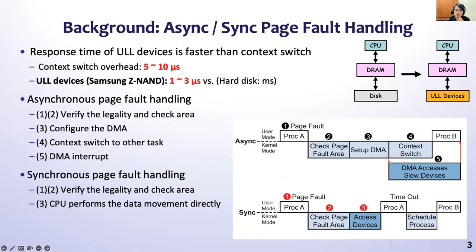Intel and IBM suggest handling page faults in a synchronous way. To handle page faults asynchronously, the operating system sets up DMA to move the page from the ULL device to DRAM, then runs context switching to give the CPU to another process. In contrast, during synchronous page fault handling, the CPU does not do a context switch, but instead busy-waits for IO completion.